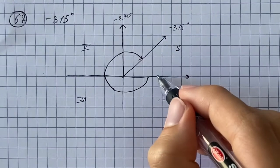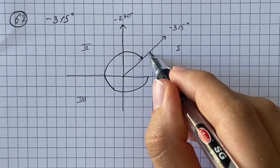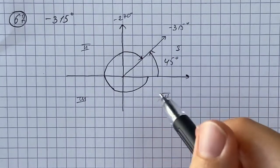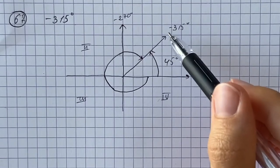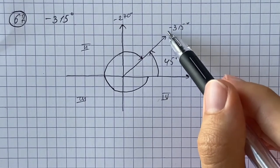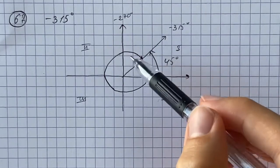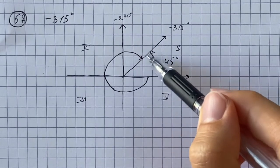And if we think about this angle, that would be positive 45 degrees. And we see that an angle of negative 315 degrees and 45 degrees are going to put the angle in the exact same place.